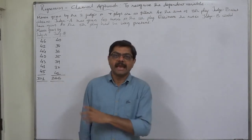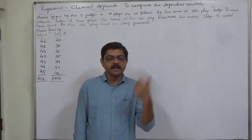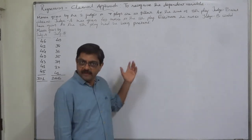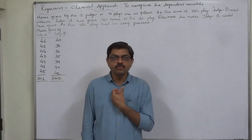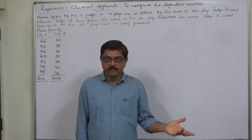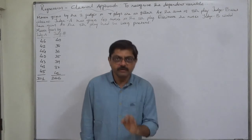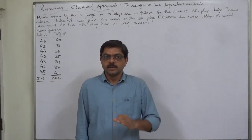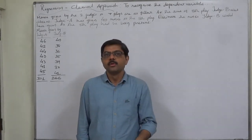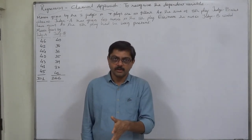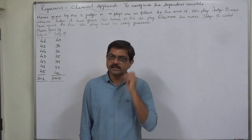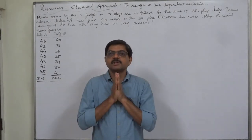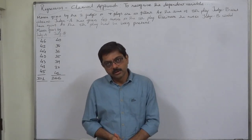If as a student we make any error in determining the dependent and independent variable, the whole solution will be wrong. In real life also we have to decide: the variable for which we need to find out the estimated value becomes the dependent variable, and the variable for which another value is available becomes the independent variable. This is a very simple thing to remember.